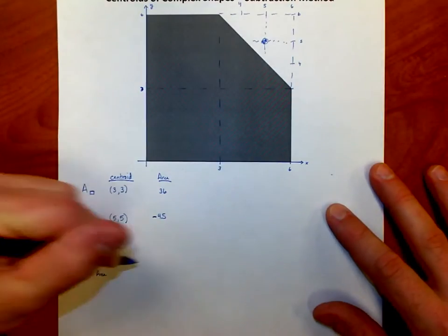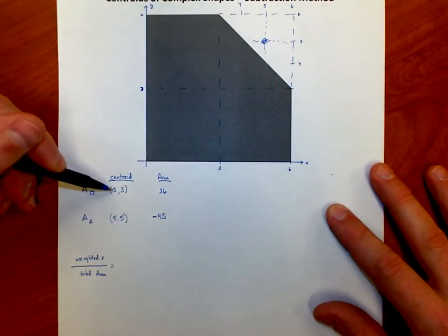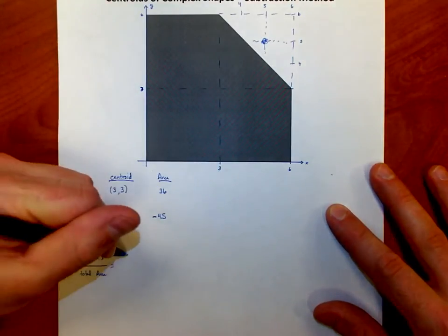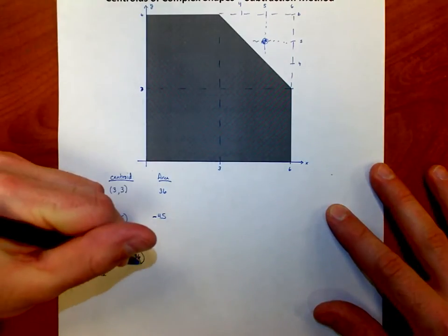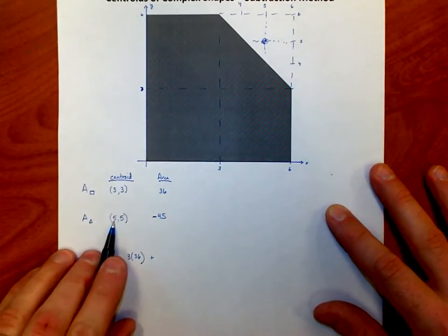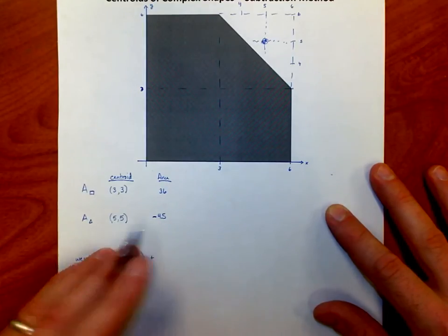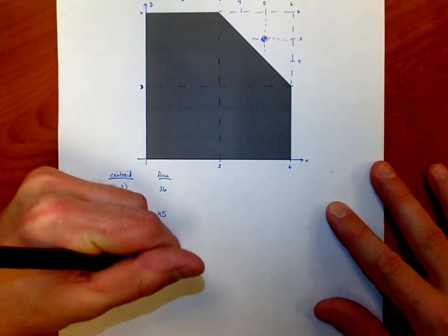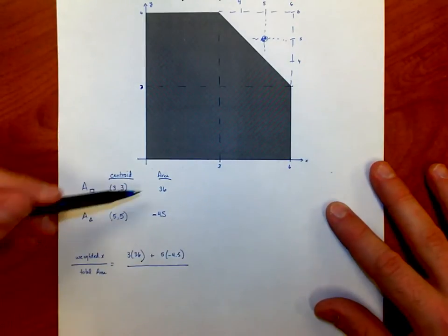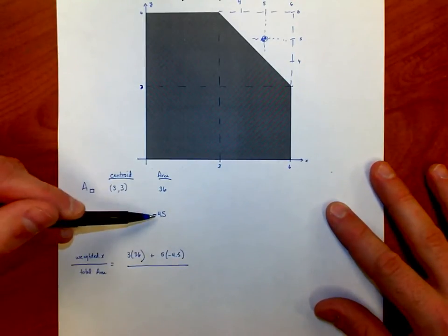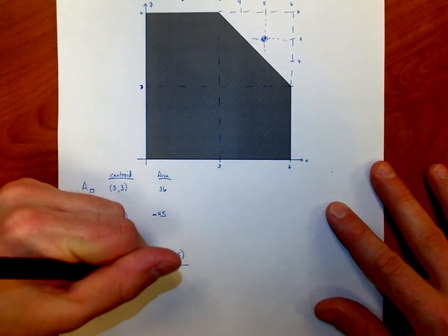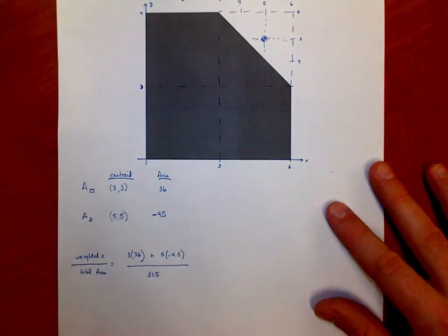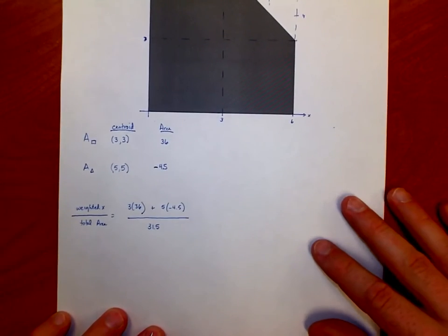The weighted x would be x coordinates: 3, but it has a weight of 36, plus 5, but it has a weighted area of negative 4.5. The total area of the shape would be 36 minus 4.5, which is 31.5, which is the same area that we got last time, so we know we're on the right track.